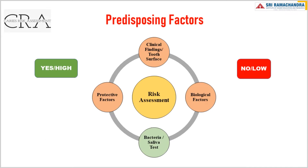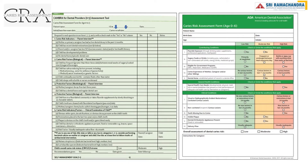What are the predisposing factors we check for assessing caries risk of a child? The predisposing factors that are uniform in all the caries risk assessment methods are clinical findings, biological factors, and protective factors. Under each factor there are a few questions that we need to mark as high or low based on the child's risk. The salivary bacterial assessment or saliva test alone is not considered in some caries risk assessment methods — for example, the ADA method, the SmileBuddy method, Previsor, and Depa tools. When comparing the CAMBRA and ADA assessment tools, all three factors — biological factors, protective factors, and clinical findings — are uniform in both forms.